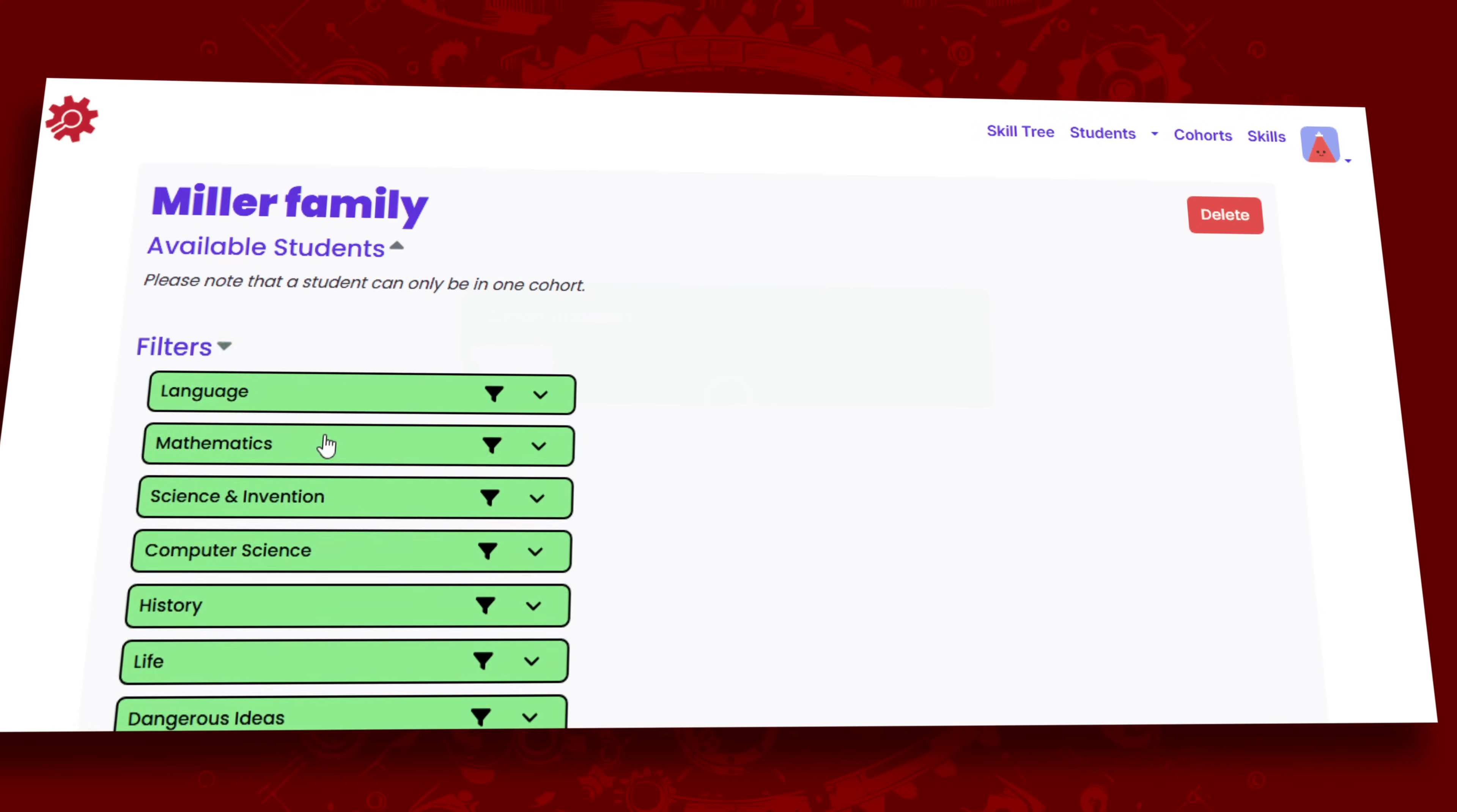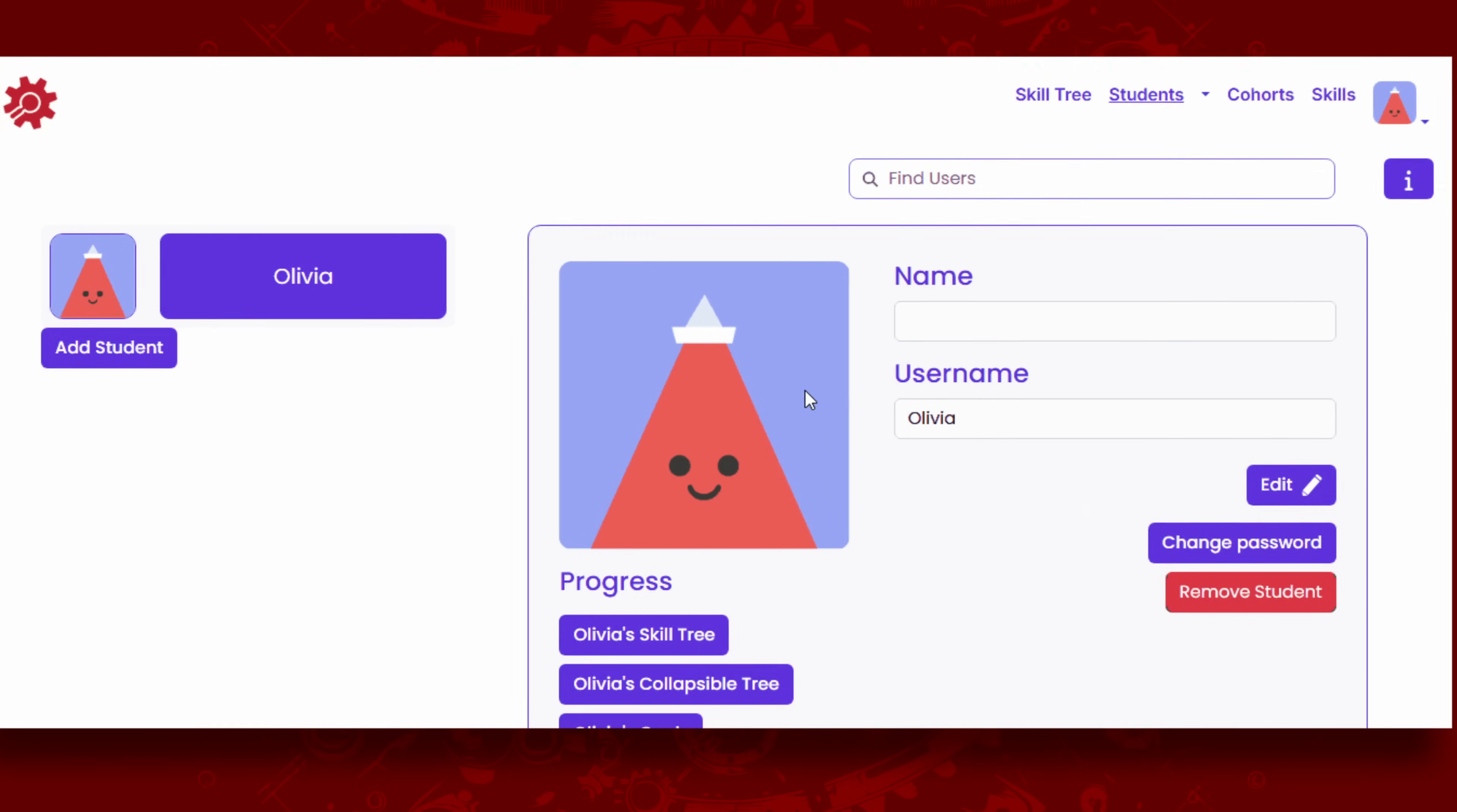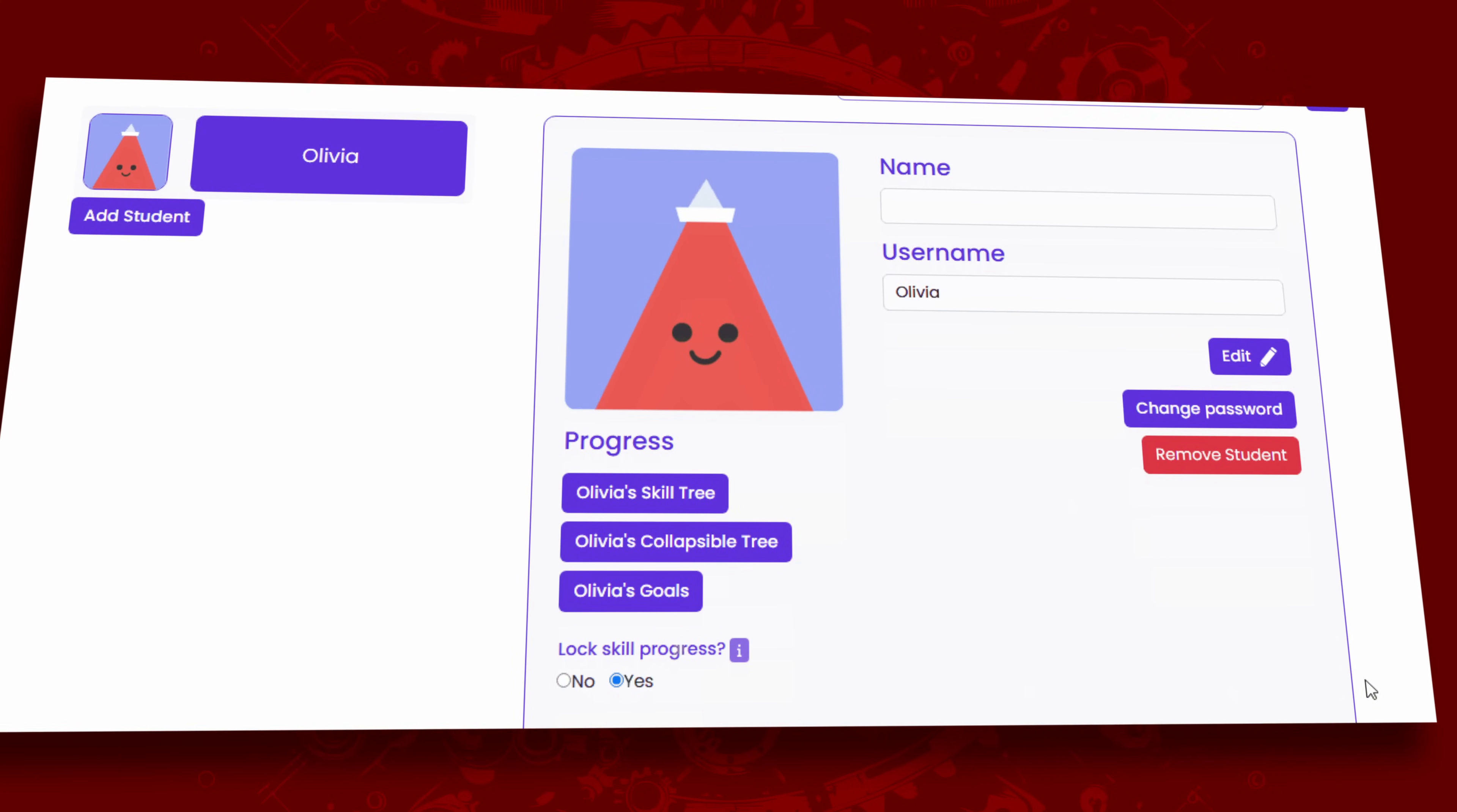If you have a normal account, you can interact with any node on the tree whenever you want. However, if you would like to lock a student into having to complete the tree sequentially, that can also be done with lower-order nodes unlocking higher-order nodes.